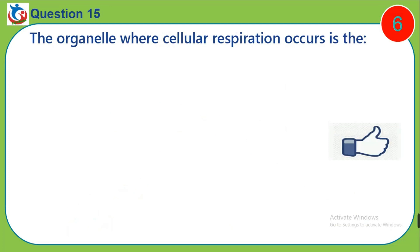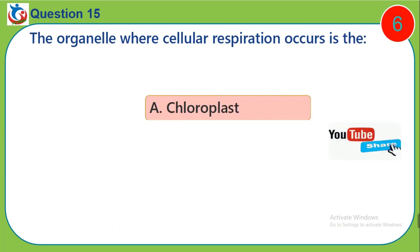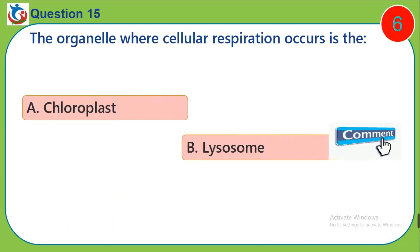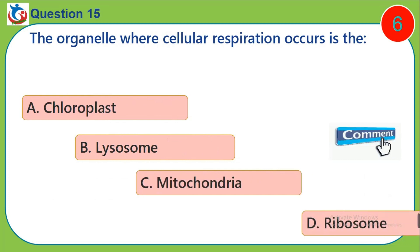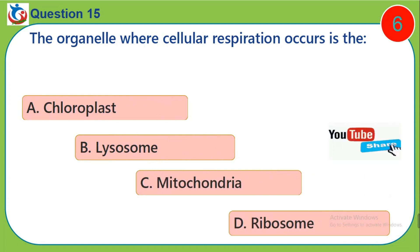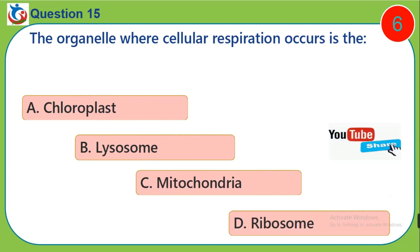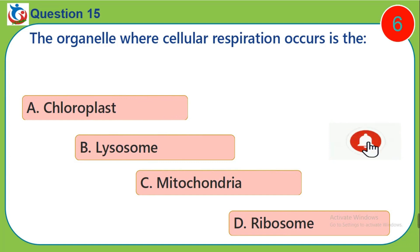Question 15. The organelle where cellular respiration occurs is the: A. Chloroplast. B. Lysosome. C. Mitochondria. D. Ribosome.